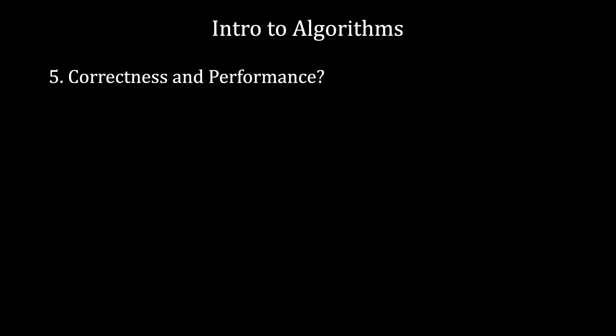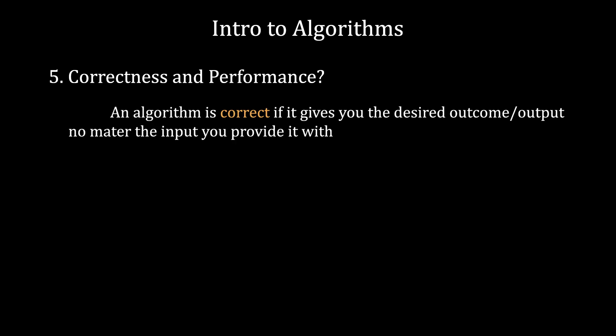Now let's discuss about the correctness and performance of some algorithm. An algorithm is correct if it gives you the desired outcome or output no matter the input you provided with. For example, Google Maps, if you give it the map of Romania and your house and your girlfriend's house, or if you give it the map of USA and Trump's and Obama's houses, it will have the same accuracy of finding the shortest path.